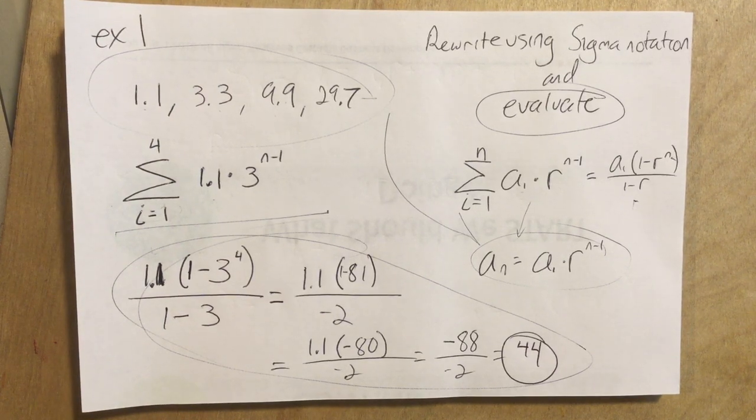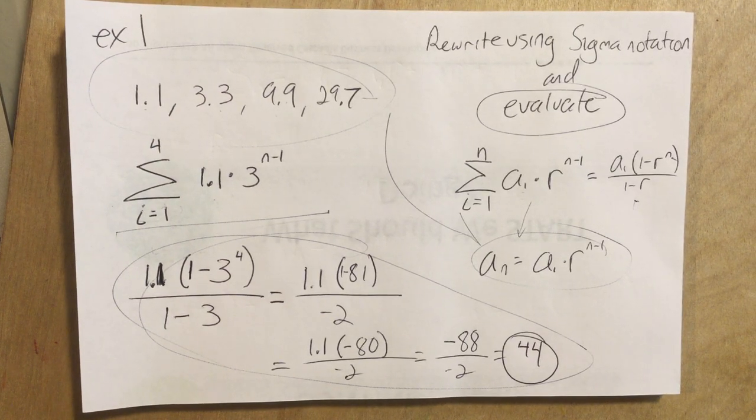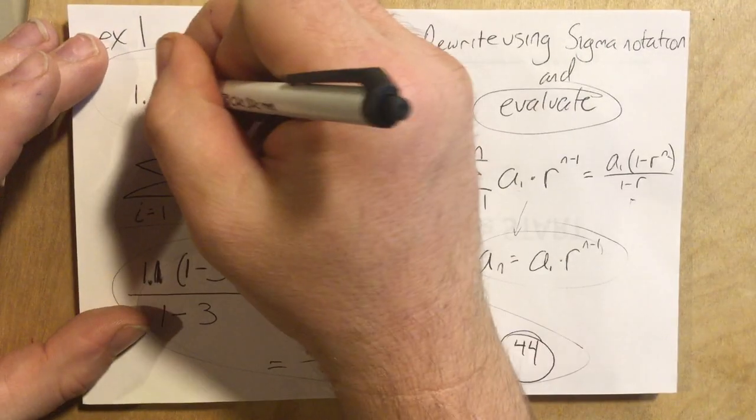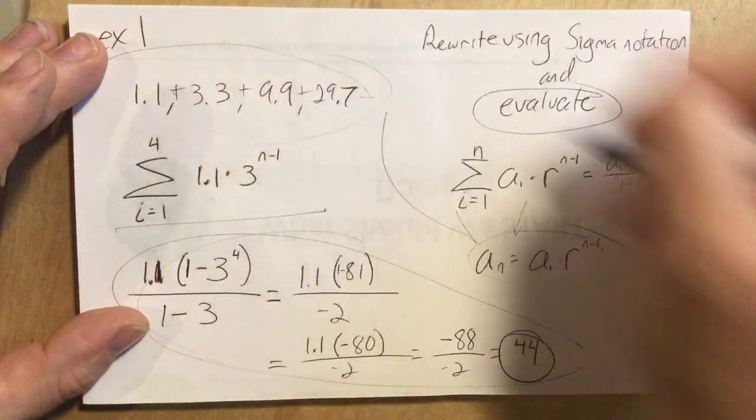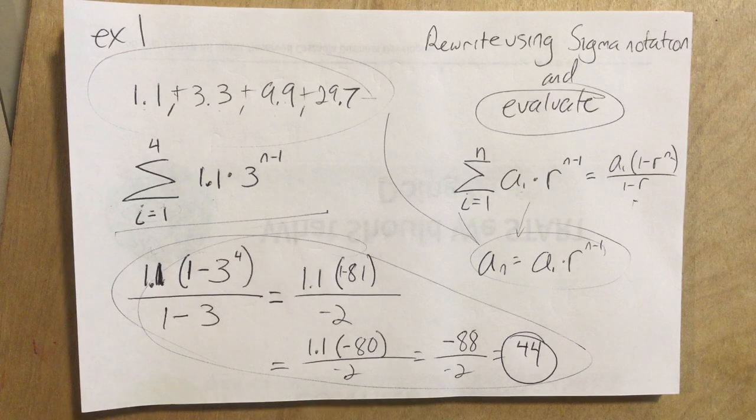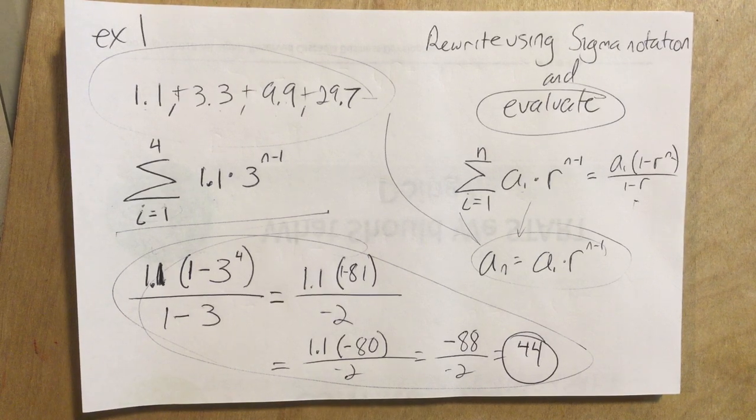Now, you might say to yourself, why would I use that formula? If it's asking me to add up the first four terms, I'm just going to kind of turn these commas into plus signs and grab a calculator and add them up. And absolutely, well, you should get the same thing.